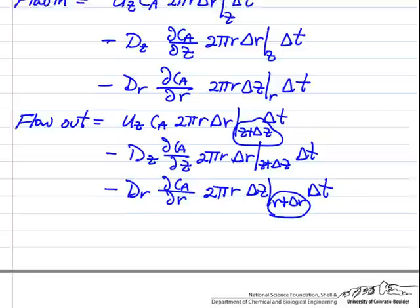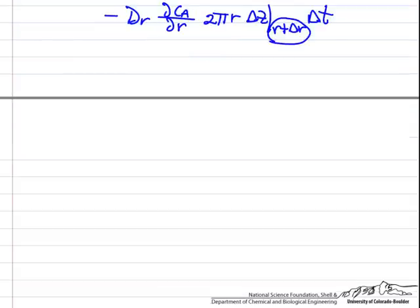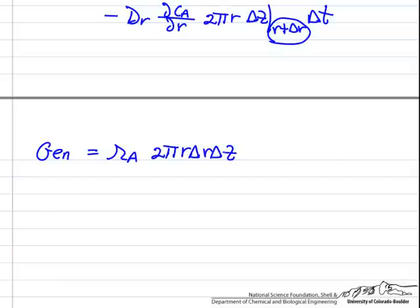The only term left is the generation term due to the reaction. The generation term is the rate of reaction times the volume: 2πr · delta r · delta z. That's the volume of the annular region. Since we're doing a balance over delta t, rate of reaction in moles per time per volume, multiplied by the volume and the time, gives us the number of moles.